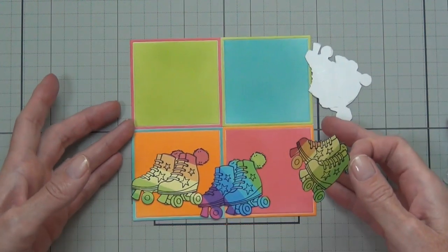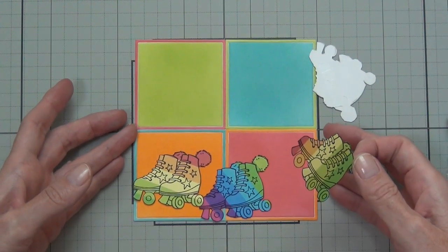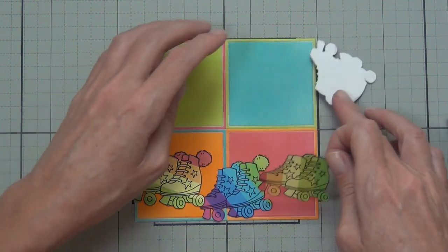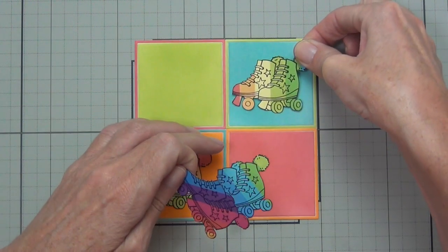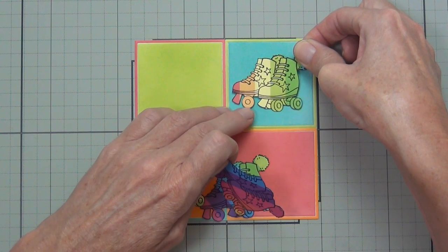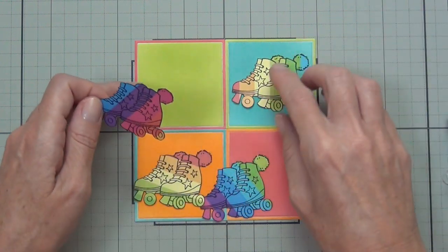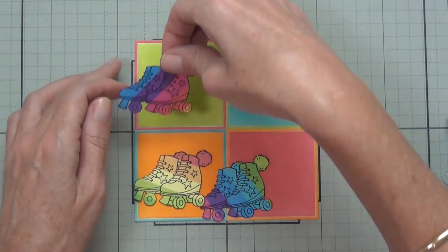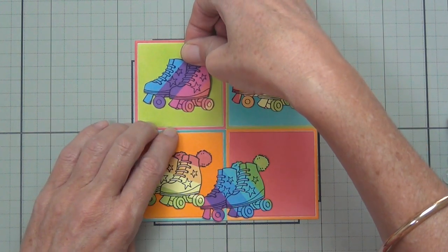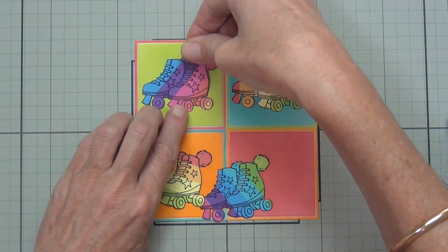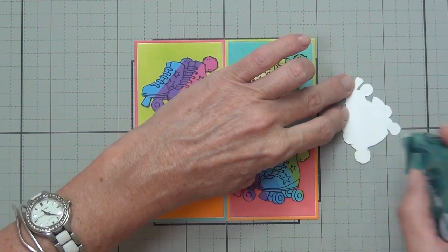I've also got a sentiment from the same stamp set and I just added some bright fun matching colors with the Copics and cut that down. Now I do have to adhere all my skates on board. When I stamped them, I made sure that they were facing all different ways on the rainbow stripes so that they weren't exactly even.